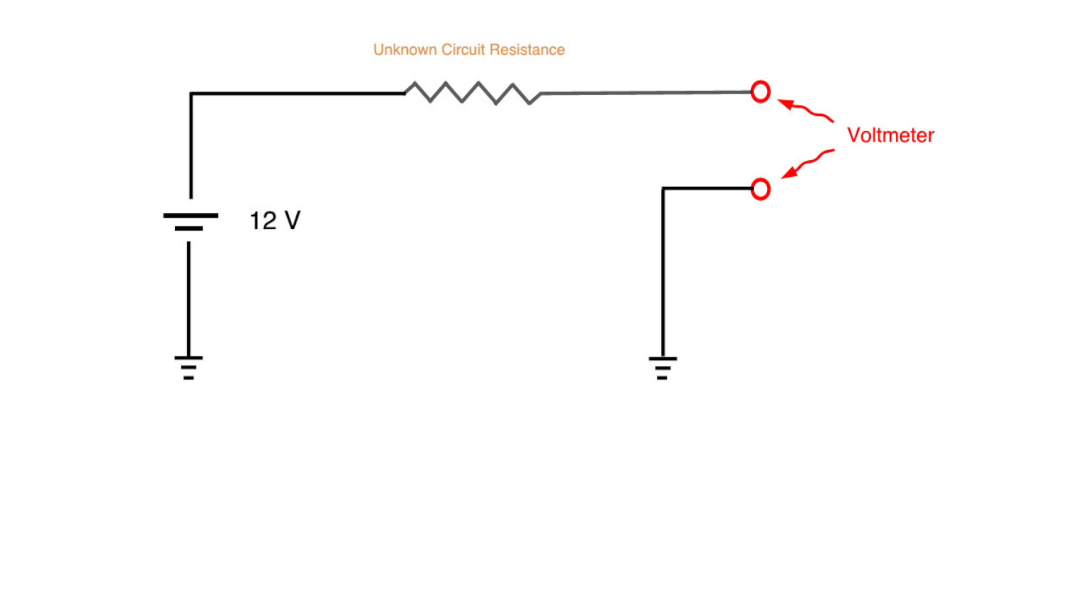Now when you suspect a part is bad, you often use a multimeter to test for power and ground at the connector. So here's the question. Suppose with corrosion you have a huge area of resistance. What would a multimeter show for voltage at this point compared to ground?